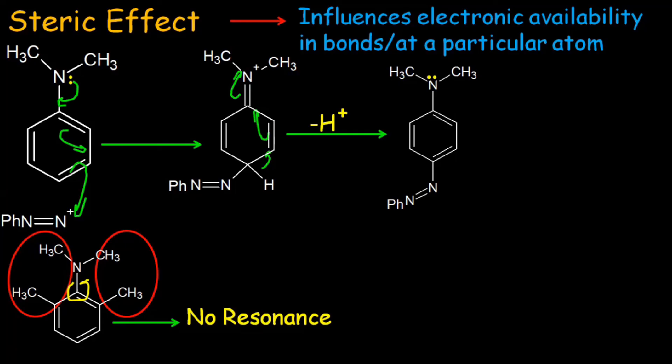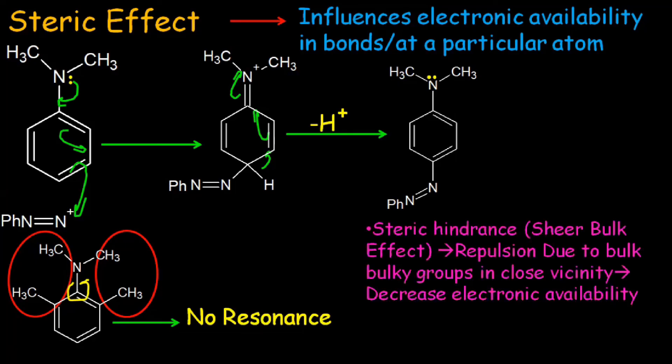From this example, we can conclude that steric hindrance or shear bulk effect depends on the bulkiness of groups and it operates when the bulky groups are in close vicinity. It decreases direct electronic availability for reaction. It also converts the delocalized bonds to the localized chemical bonds. This was all about the steric effect.